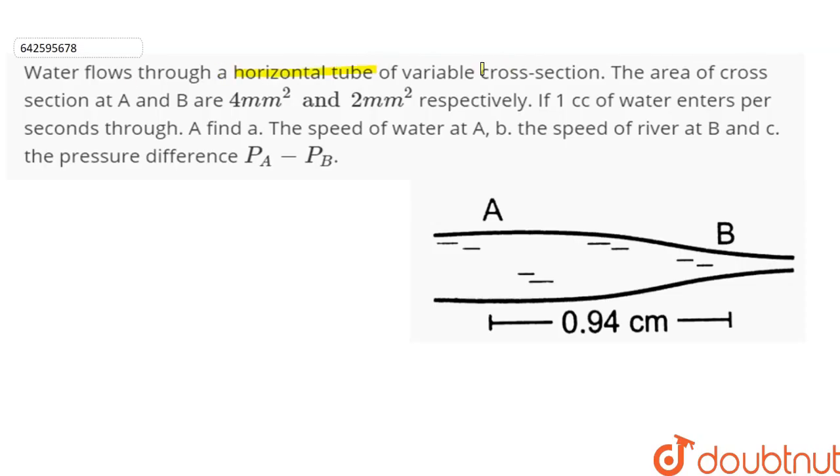Water flows through a horizontal tube of variable cross-section. The area of cross-section at A and B are 4 mm square and 2 mm square respectively. If 1 cc of water enters per second through A, find the speed of water at A, the speed of river at B, and the pressure difference PA minus PB.